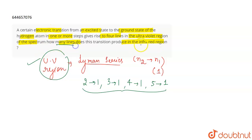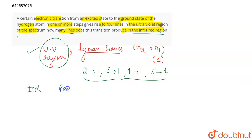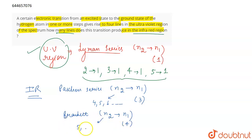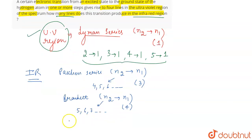Now, how many lines does this transition produce in the infrared region? In the infrared region, we have the Paschen series, where N1 is fixed at 3 and N2 can be 4, 5, 6, and so on. We also have the Brackett series, where N1 is fixed at 4 and N2 can be 5, 6, 7, and so on. After Brackett, we have the Pfund series, where N1 is fixed at 5 and N2 can be 6, 7, 8, and so on.